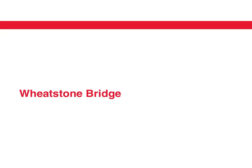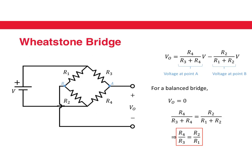Both these problems are sorted out by using a Wheatstone bridge. A Wheatstone bridge is essentially a circuit as shown here and it has two voltage dividers in it. R1 and R2 make one voltage divider, and similarly R3 and R4 make another voltage divider. The power supply for both voltage dividers is the same, and the output of the Wheatstone bridge is the difference of the voltages of these two voltage dividers.